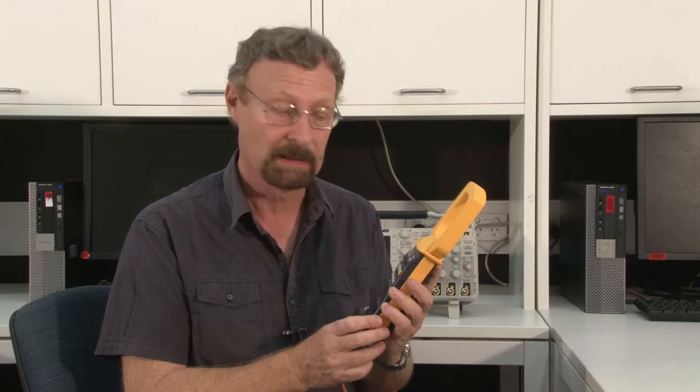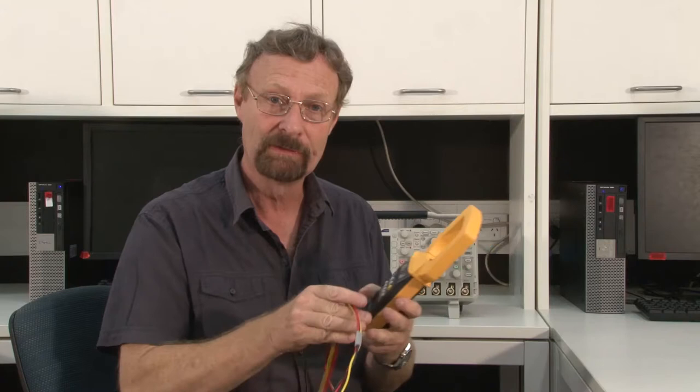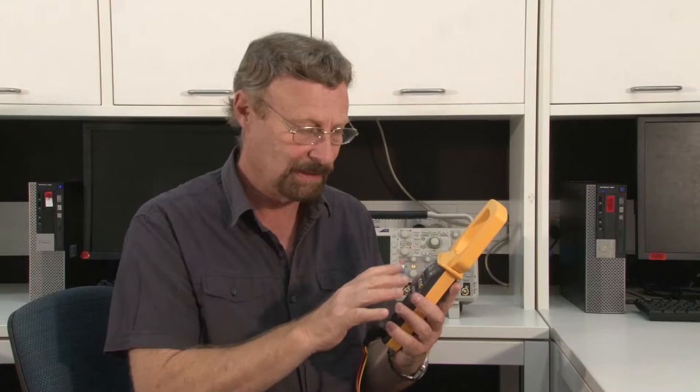It's capable of making measurements of currents up to 1000 amps and voltages up to 600 volts. It's a clamp-on device, so when we're measuring the current we simply clamp around the cable, and these leads are used for making the voltage measurement. If we're talking about a single phase, then we're typically using the black and the red lead.